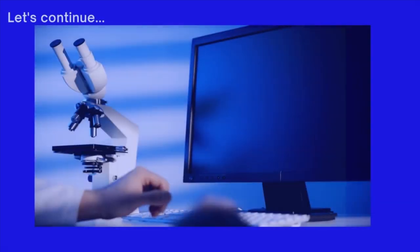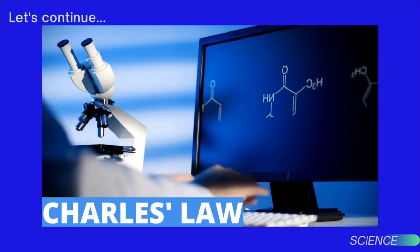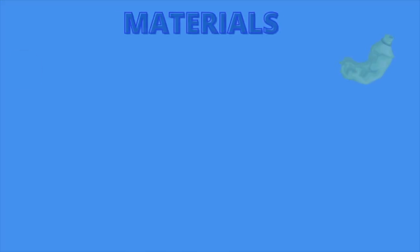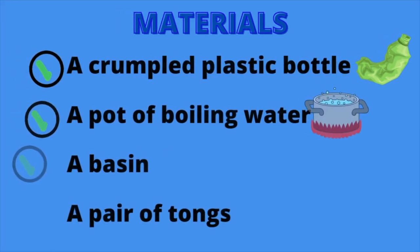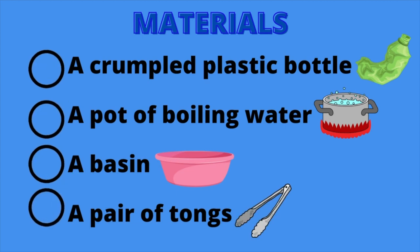Our experiment will require things that you will most likely have in your house, so let's get to it. For our experiment today, you will need: a crumpled plastic bottle, a pot of boiling water, a basin, and a pair of tongs.